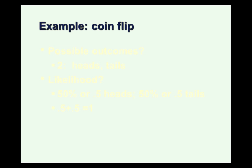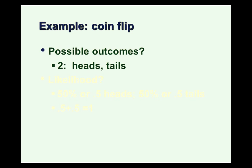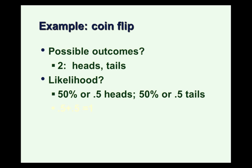As an example of these concepts, if we think of it as a simple coin flip, there are two possible outcomes: heads or tails. The likelihood of these possible outcomes with a fair coin is 50-50, and of course probabilities must add to 1. So in this case, the probability distribution says heads at 50% and tails at 50%.